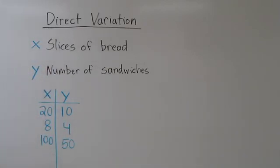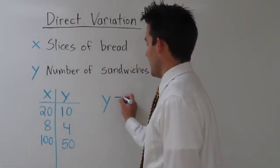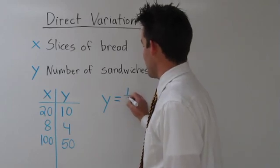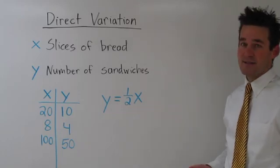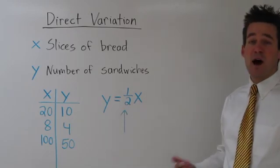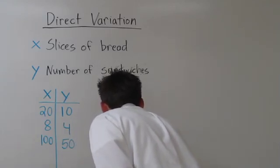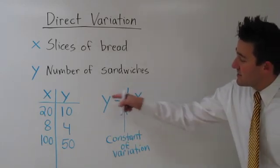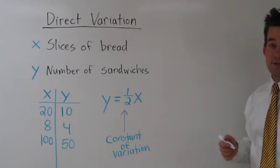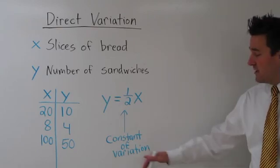If we summarize the relationship between our variable x, slices of bread, and y, number of sandwiches, we could use the equation: the number of sandwiches we can make equals half the number of slices of bread we have. y equals one half x. This one half we call the constant of variation. x and y can vary, but the one thing that remains the same is this one half — the constant of variation.